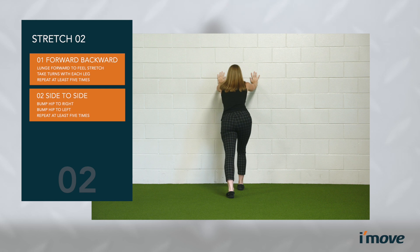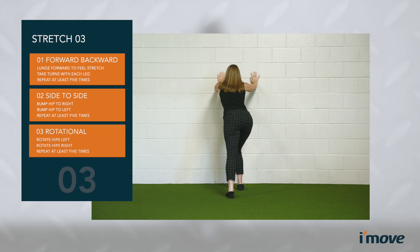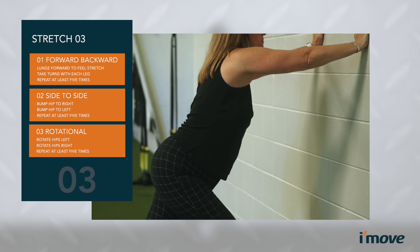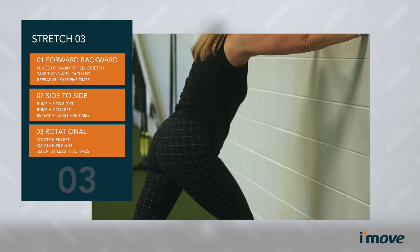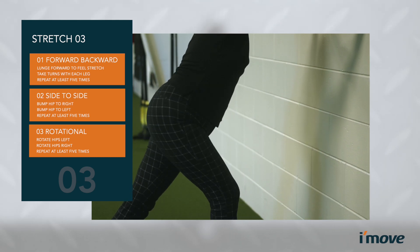The final stage is a rotation of the hips. You will rotate right, then rotate left with your belly button, while you hold that forward lunge position.